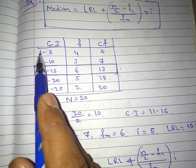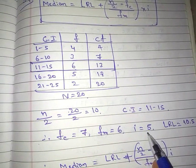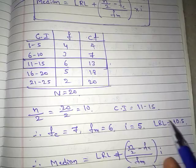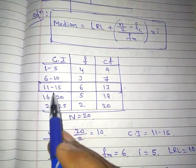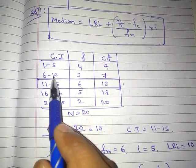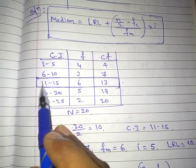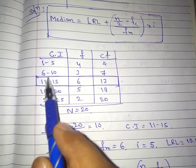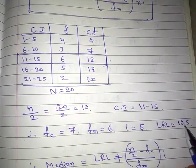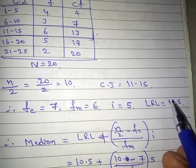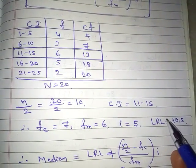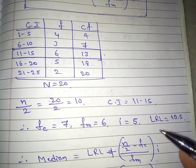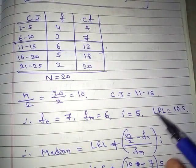The class interval width i = 5, since 1 to 5 has a range of 5. For the lower limit L: the median class is 11–15, and the previous class ends at 10, so the true lower limit is 10.5. After this problem, I will explain another method for taking the lower limit.